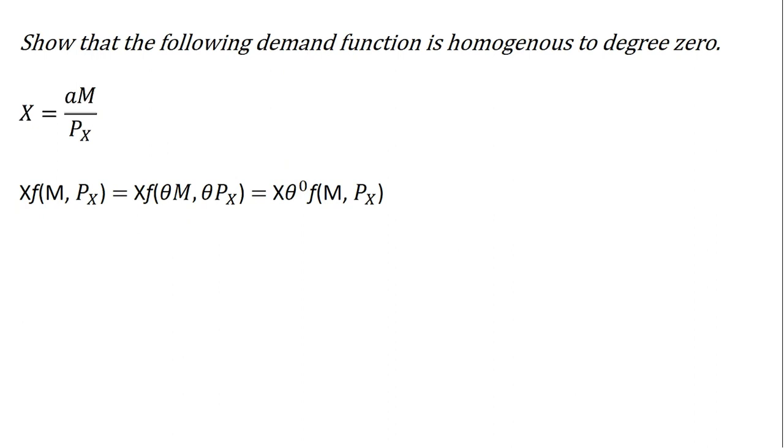Again, it wouldn't have any effect on our consumer's demand. So to show that more explicitly, here we have the consumer's demand. Wherever I have income or a price term, I'm going to multiply it by some number, theta. This could be 2. This could be 1.5. So just some constant. And what you'll notice here is the theta and theta cancel. So again, this is equivalent.